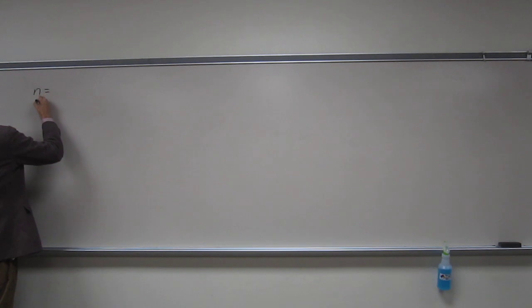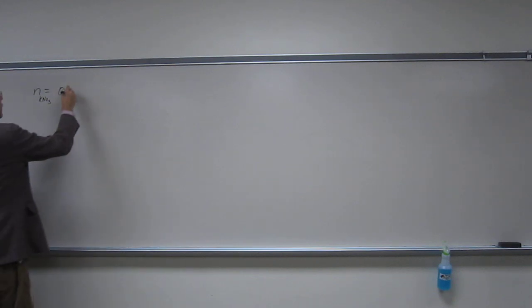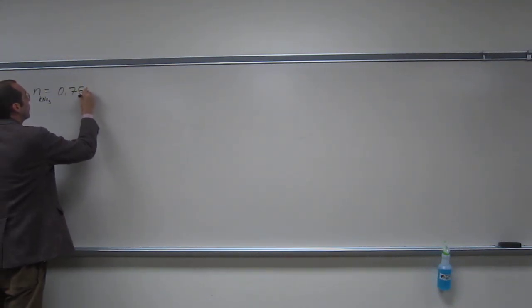Okay, so how do we calculate that molarity? Well, it tells us the number of moles of potassium nitrate are 0.754 moles.